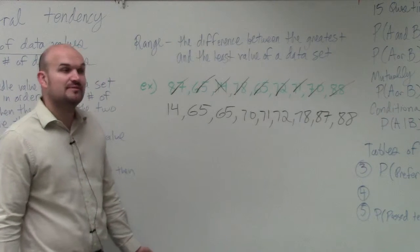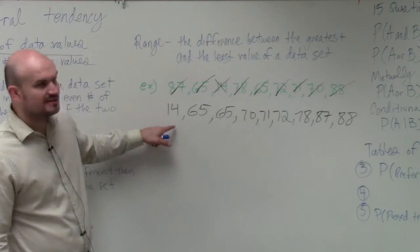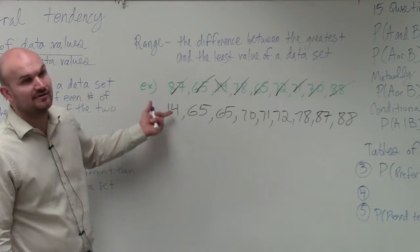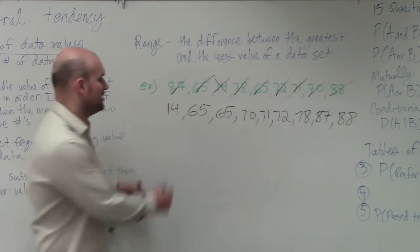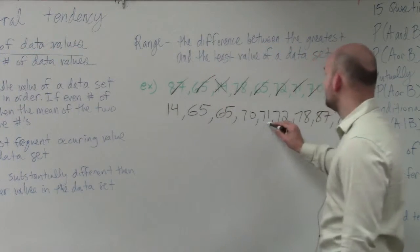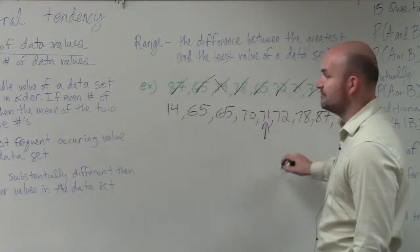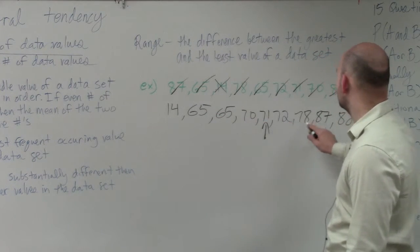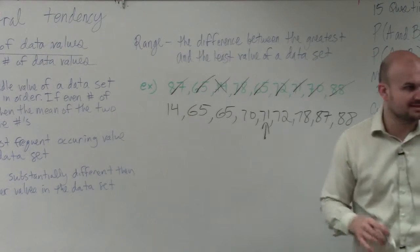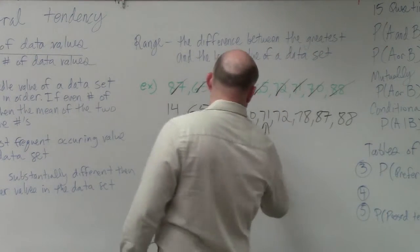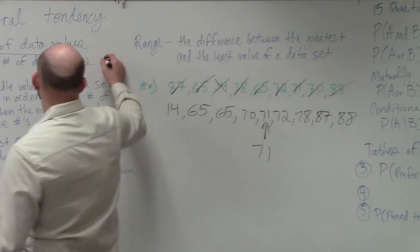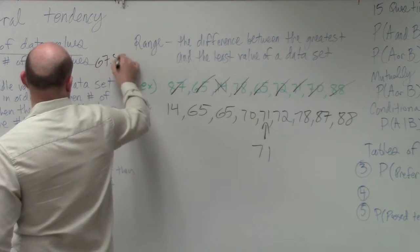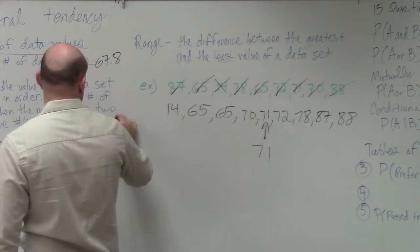Now we need to find the middle value. We can count how many values we have - we have nine, right? So counting 1, 2, 3, 4, 5 - you can see that 71 should be the middle value as you go 1, 2, 3, 4 values to the left and 1, 2, 3, 4 values to the right. Therefore, the mode is 71. So our mean was 67.8, our median was 71.